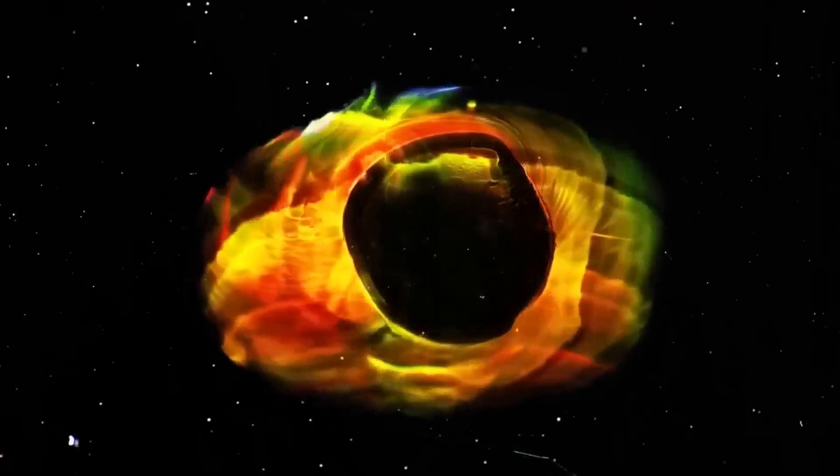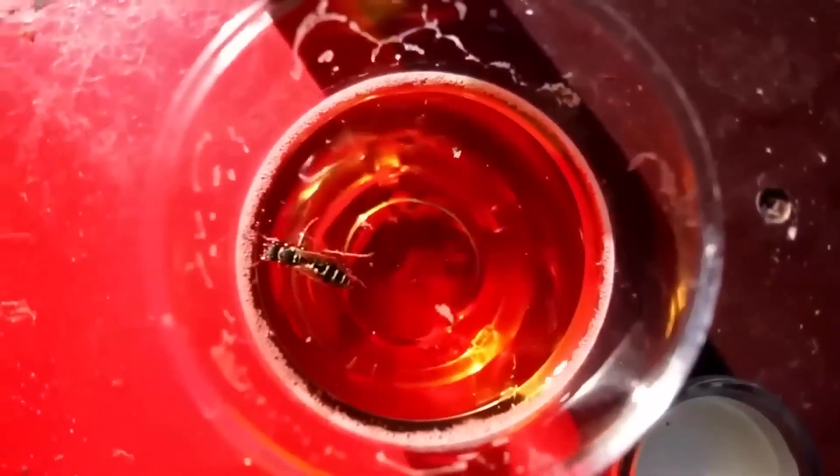The scale of this ejection was astounding, estimated to be about 400 billion times the mass of a typical coronal mass ejection from the sun. This massive release of material raised eyebrows across the scientific community, suggesting that Betelgeuse could be in the final stages of its life.